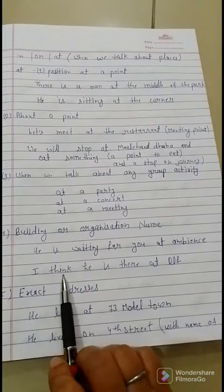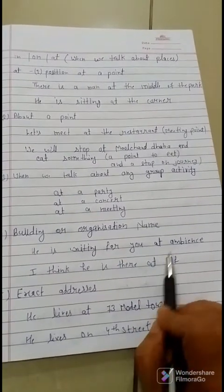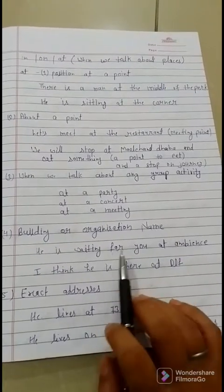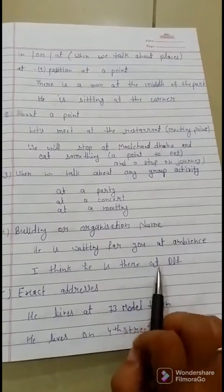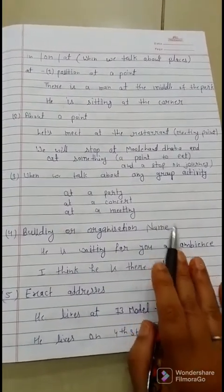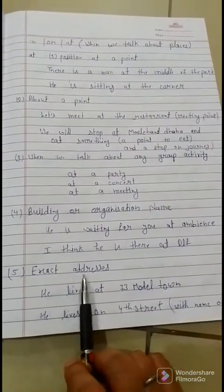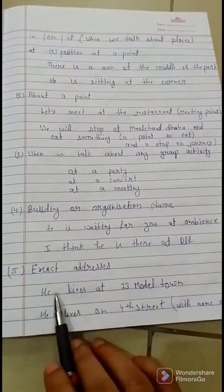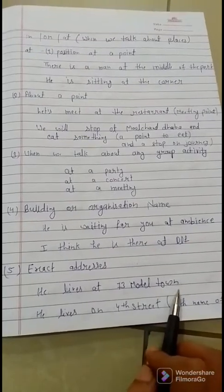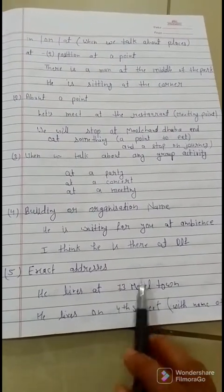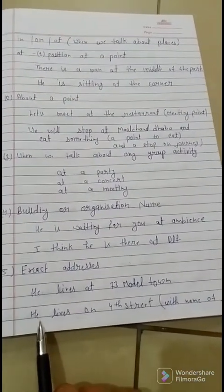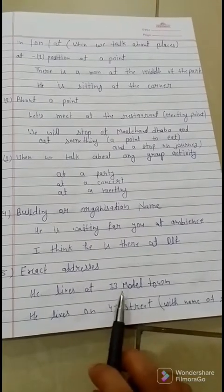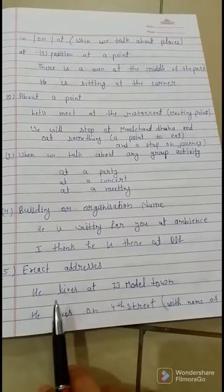Another example: 'I think he is there at DLF' — we are talking about the DLF building in general, not specifying inside or outside, so we use 'at'. We also use 'at' when talking about an exact address. For example, 'he lives at 73 Model Town' — we use 'at' with the exact address. But if we say 'he lives on Fourth Street', we use 'on' with street names, not 'at'.